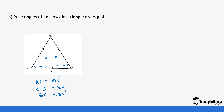That tells us that this angle here equals this angle here. We'll call this angle C and this angle C prime. So angle C equals angle C prime. This is because the distances BC and BC prime are equal, and AC and AC prime are also equal, so these two angles are equal. Therefore, the base angles — angle ACB and angle AC prime B — are actually equal.